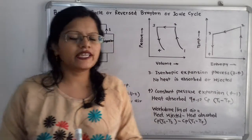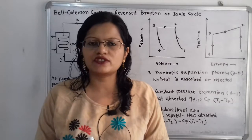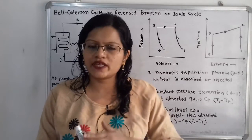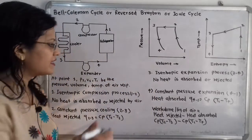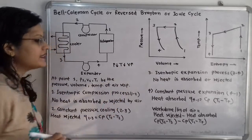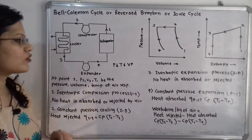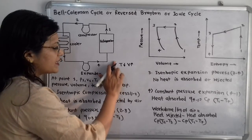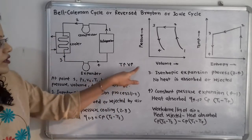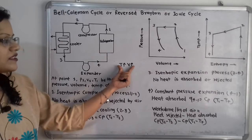The next process is constant pressure expansion in the refrigerator. Normally, expansion means pressure decreases, temperature decreases, and volume increases. But here the condition is that pressure remains constant. At constant pressure, instead of a temperature decrease we show an increase in temperature, along with an increase in volume.